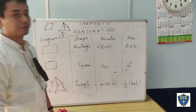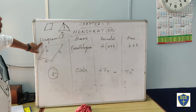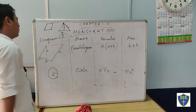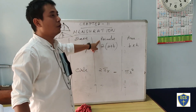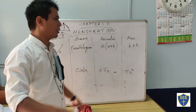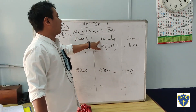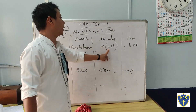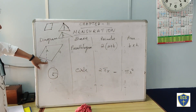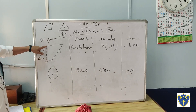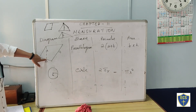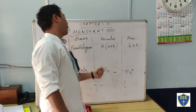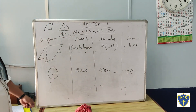Next is parallelogram. The perimeter of a parallelogram is 2(a plus b), similar to a rectangle. The area is base into height. Just like a triangle has a base and height, in a parallelogram you multiply base and height to get the area.